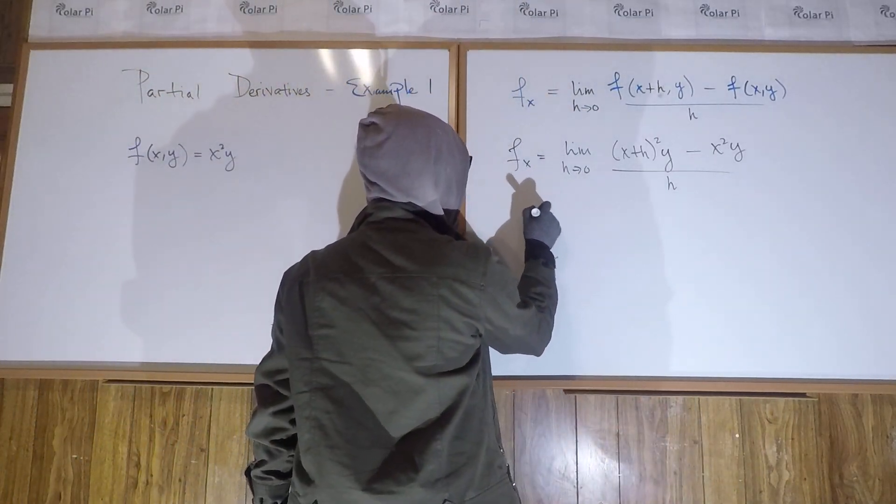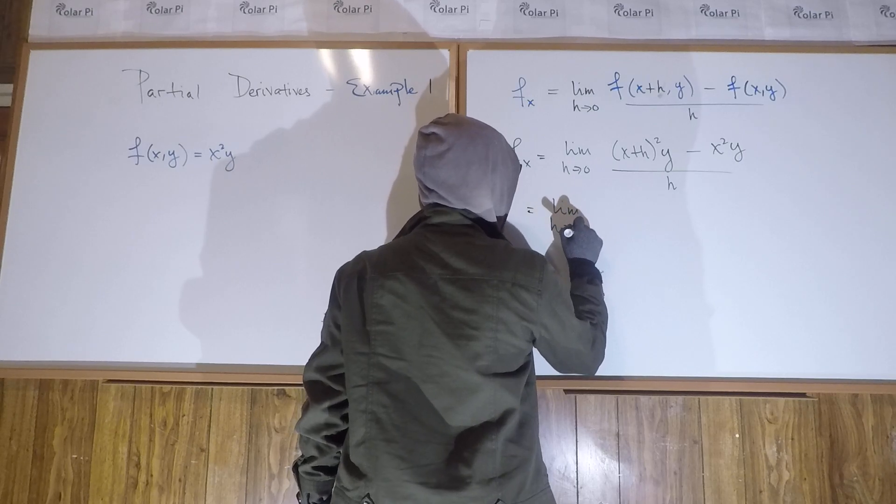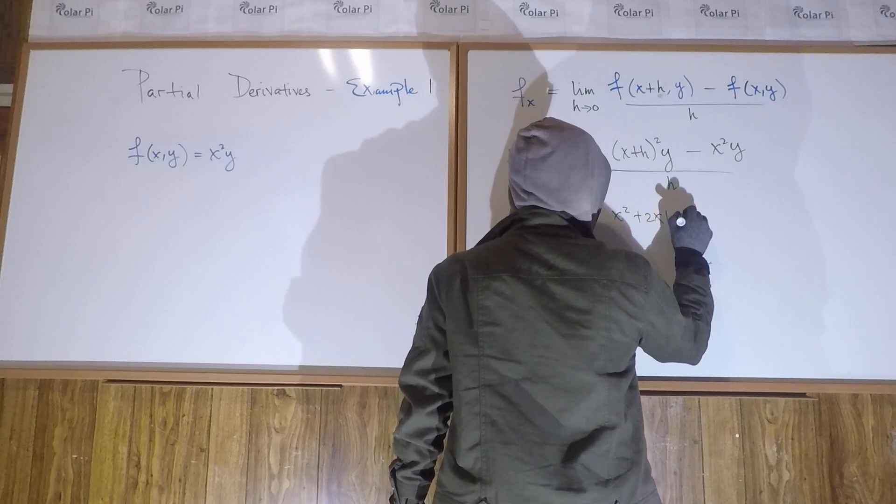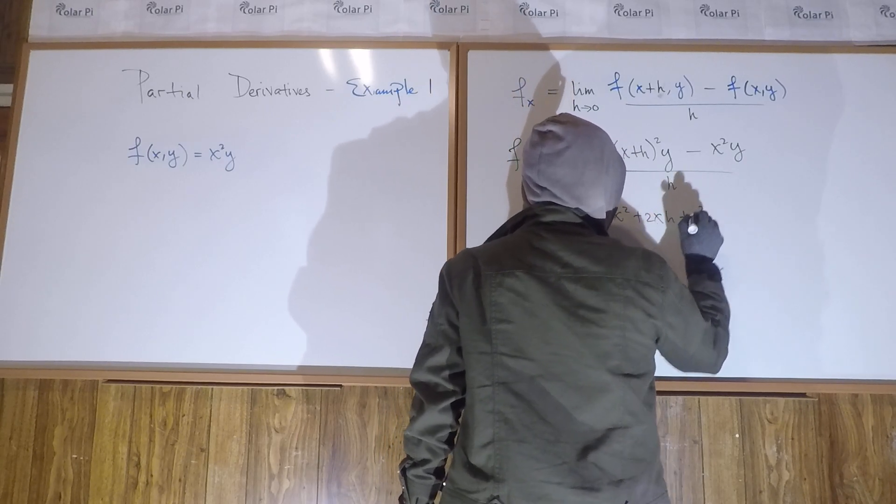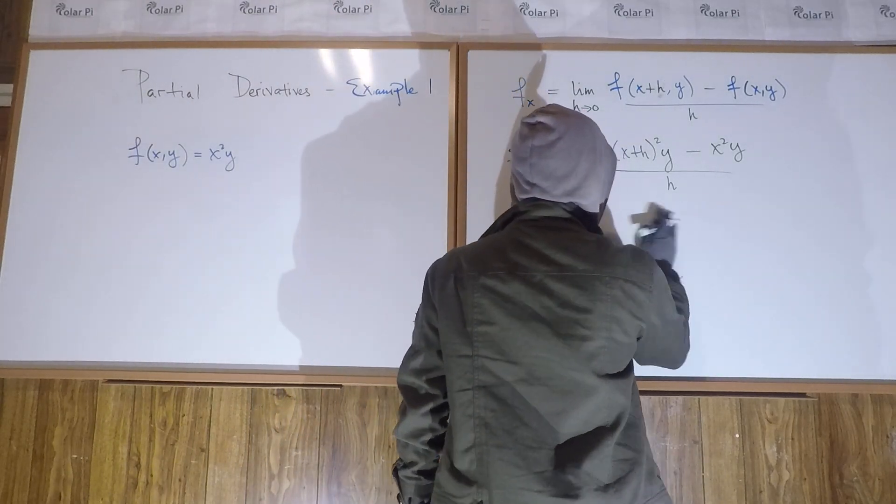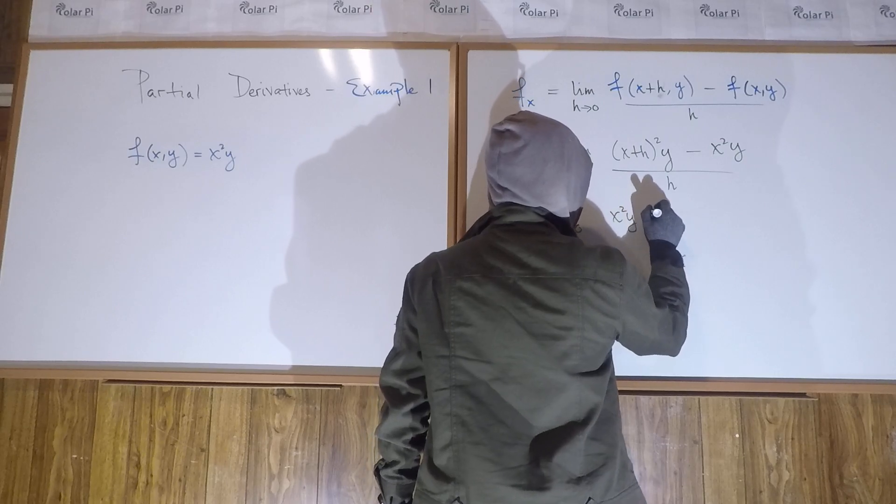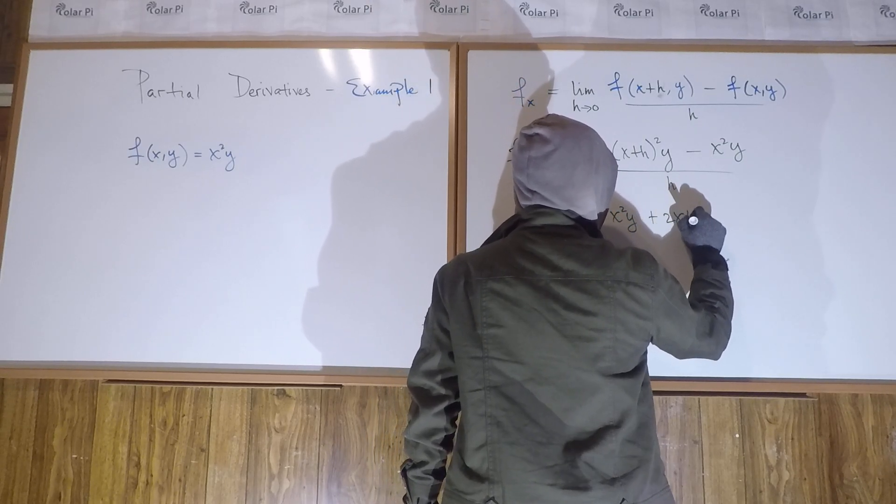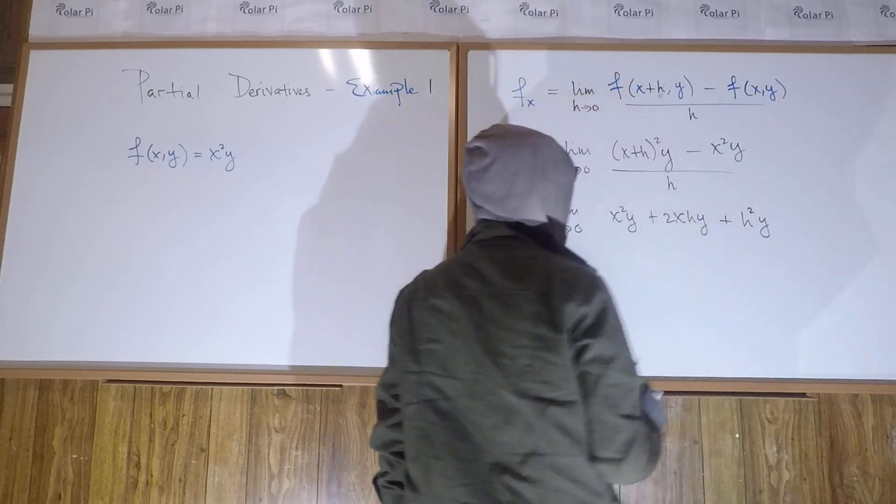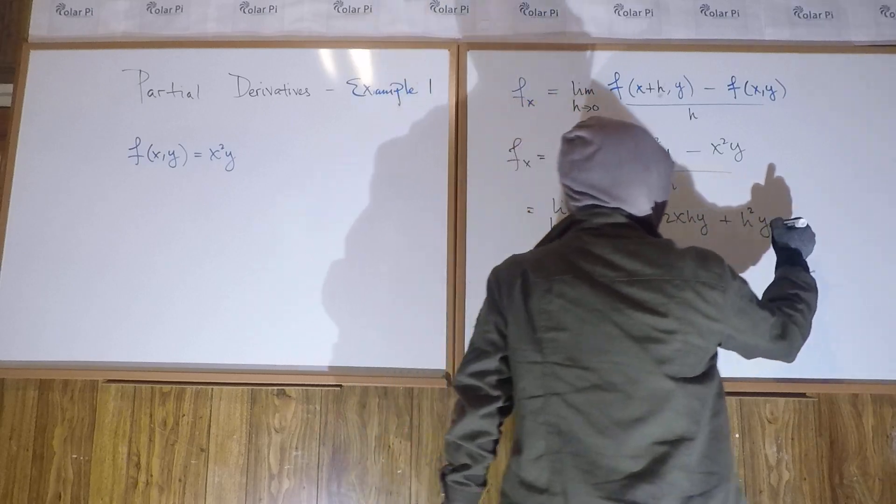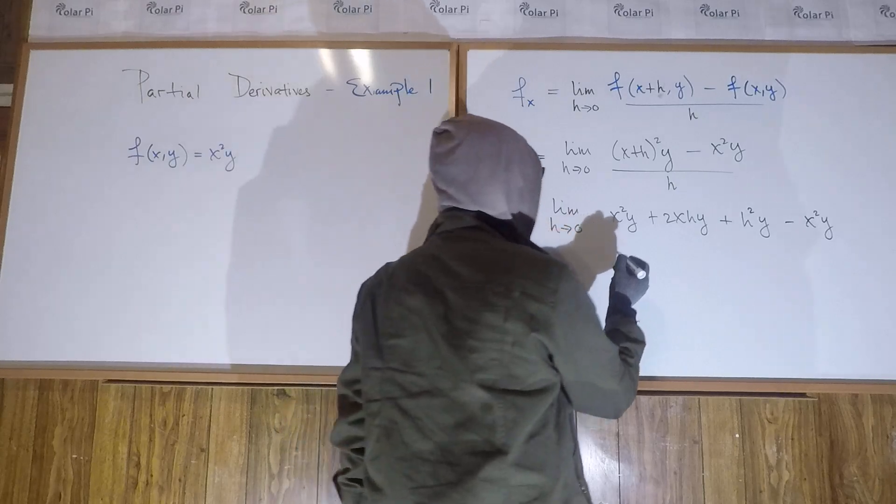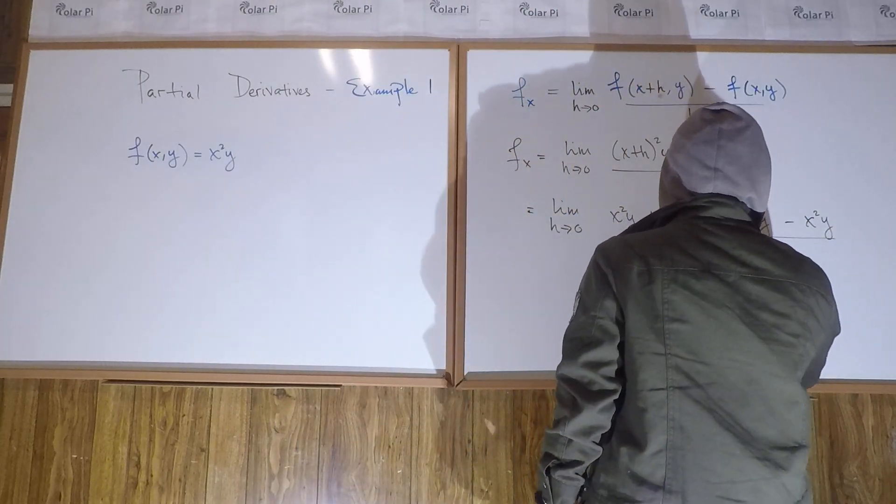Now, so then this is equal to the limit as h goes to zero of this. If we expand that binomial, it's x squared plus 2xh plus h squared, but all of it is multiplied by y. So x squared y plus 2xhy plus h squared y, right? And then minus x squared y, all of that all over h.